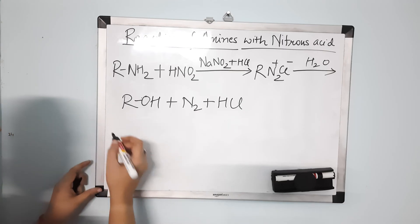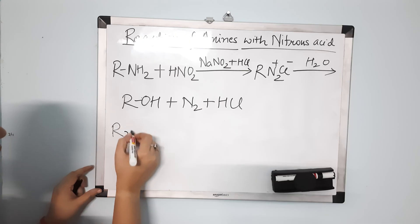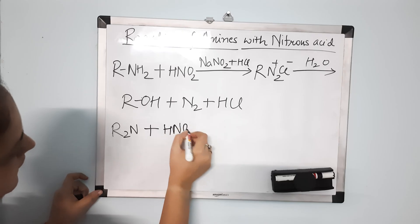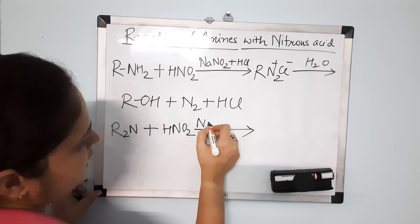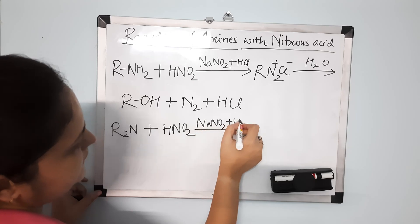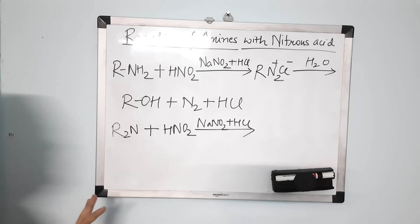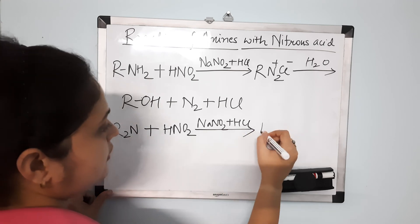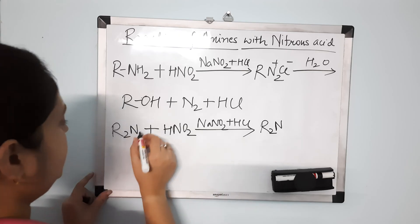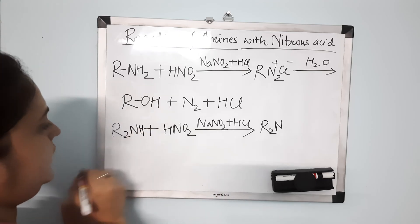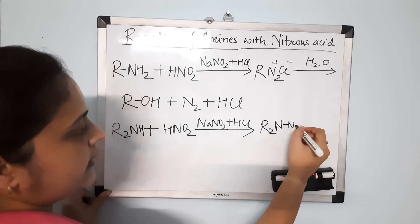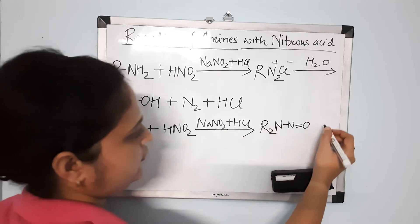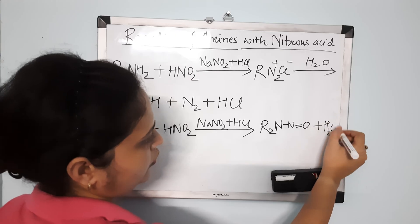Now, second is the secondary amine. For example, take R₂NH and react it with HNO₂. The reacting mixture will be NaNO₂ and HCl. What you will get is your nitroso amine. The nitroso amine is R–N–N=O, written as RN–N=O.